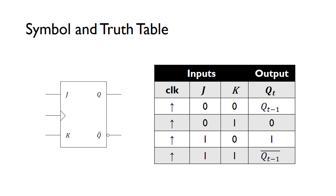When both the J and K inputs are 0, the output Q will just stay the same in the next clock cycle — it holds the value that it's currently storing. If J is 0 and K is 1, we reset the flip-flop, so we put a 0 on the output, resetting the value to 0.